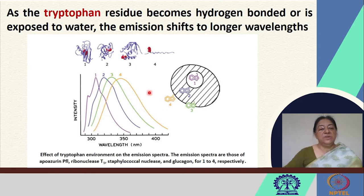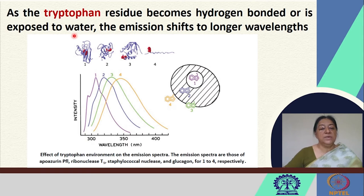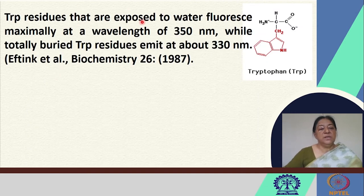As the tryptophan residue becomes hydrogen-bonded due to a denaturant that results in unfolding of the protein, there is exposure of the tryptophan to the solvent. This exposure results in what is called a red shift, as is evident from the spectra where fluorescence emission intensity is on the y-axis and wavelength on the x-axis. As the tryptophan becomes hydrogen-bonded or is exposed to water, the emission shifts to longer wavelength. Tryptophan residues exposed to water fluoresce maximally at 350 nanometers, while those totally buried emit at about 330 nanometers, giving us an indication of where the tryptophan residue lies.